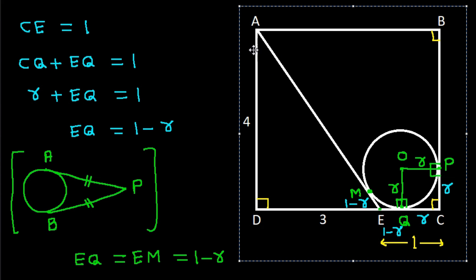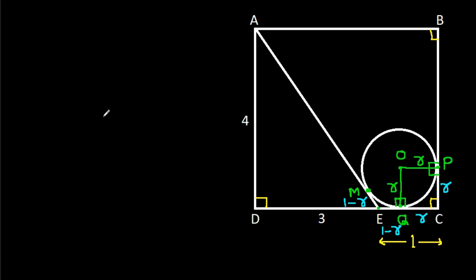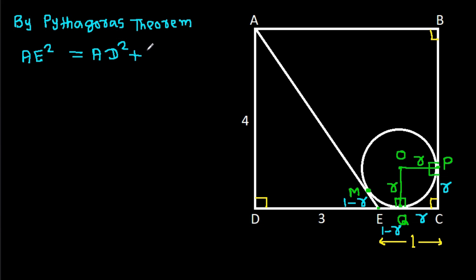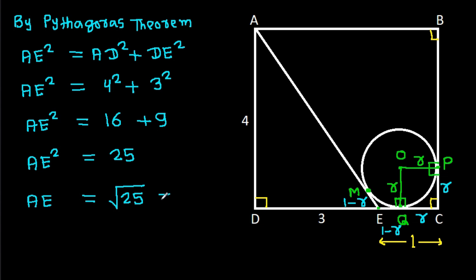Now by Pythagoras theorem, AE squared equals AD squared plus DE squared. That is 4 squared plus 3 squared, which equals 16 plus 9, giving AE squared equals 25. So AE equals root 25, that will be 5.